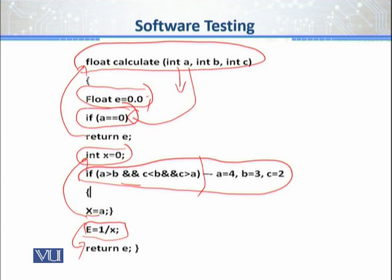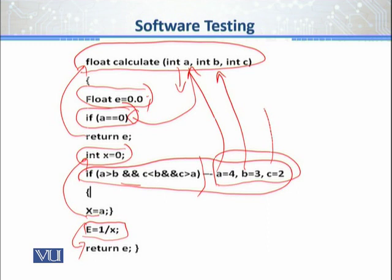Now just assume that यह हमारा sample data है — यानी a के अंदर हमारे पास 4 है, b के अंदर 3 है, c के अंदर 2 है. Now let us see what happens. अगर a की value 0 है तो यह if statement हम test कर सकते हैं — we are good.